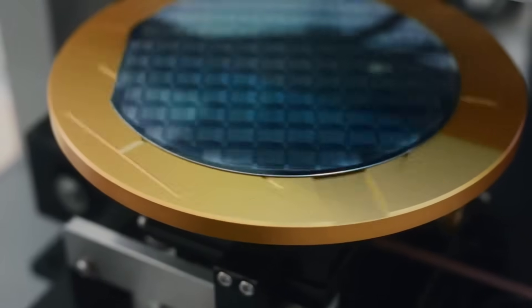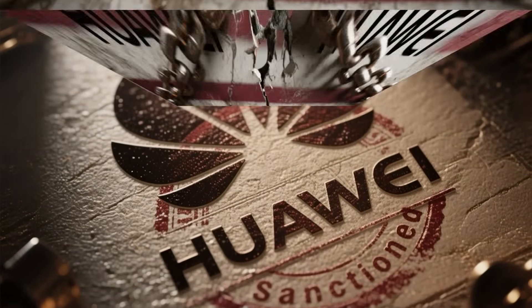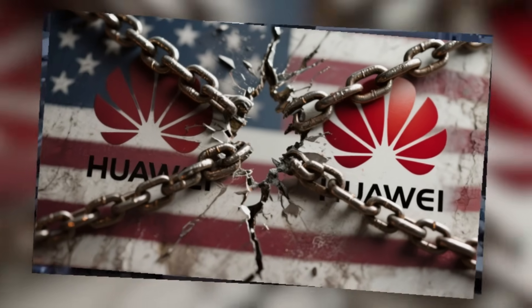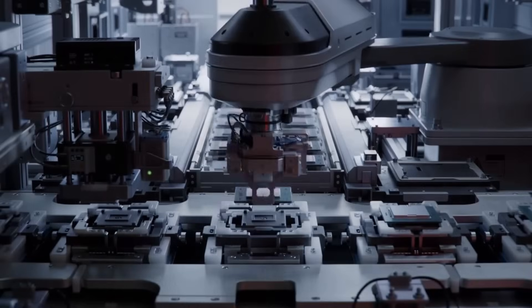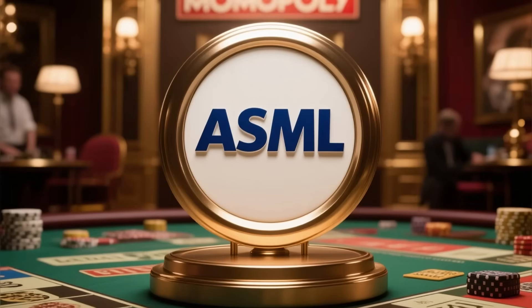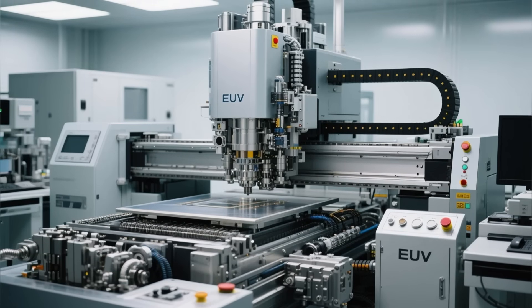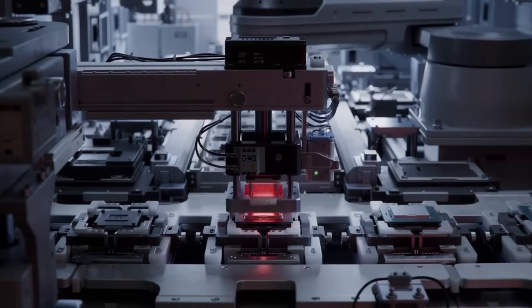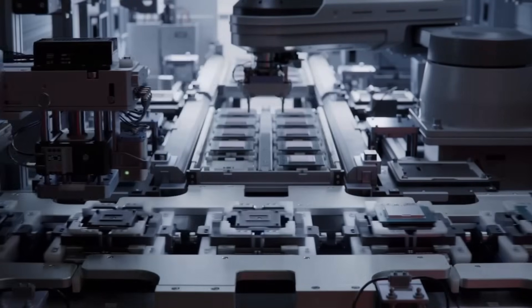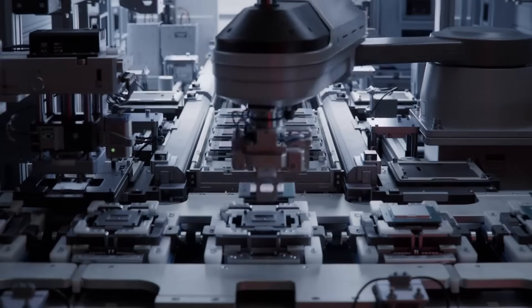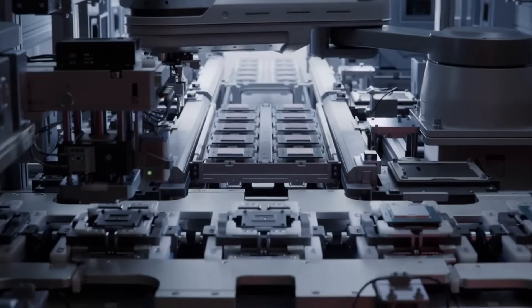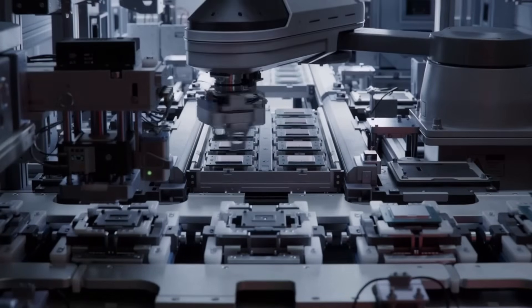Let's cut through the noise and focus on what's actually happening. Back in 2019, the US government slammed Huawei with devastating sanctions, cutting them off from American chip technology. ASML, the Dutch company that holds a complete monopoly on EUV machines, was pressured to stop all shipments to China. These machines cost over $350 million each and represent two decades of development involving thousands of the world's most precise components.